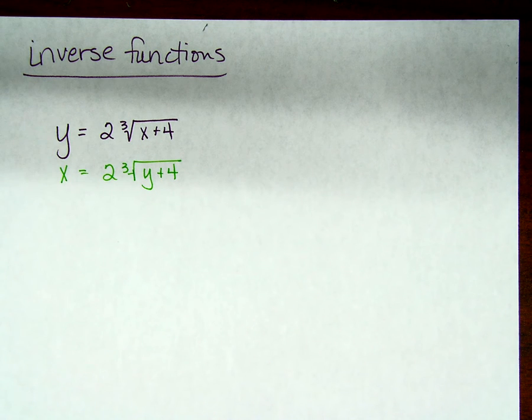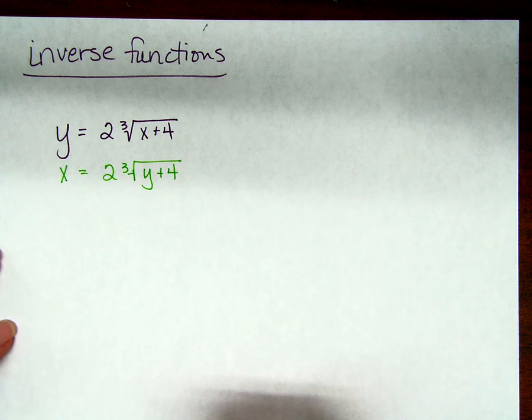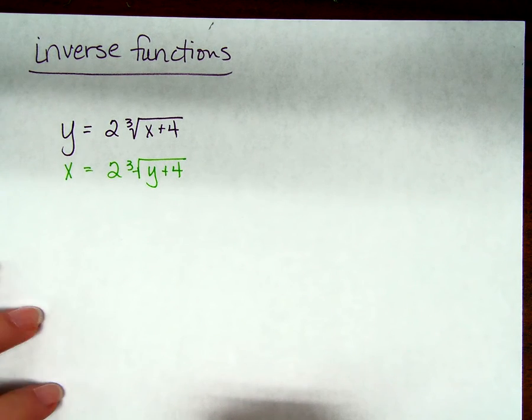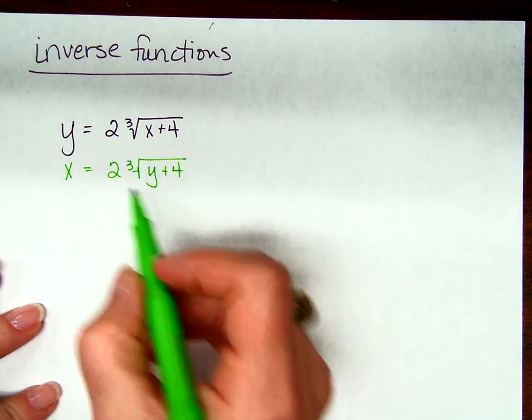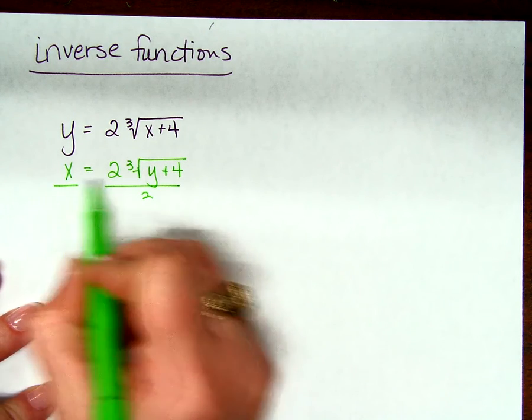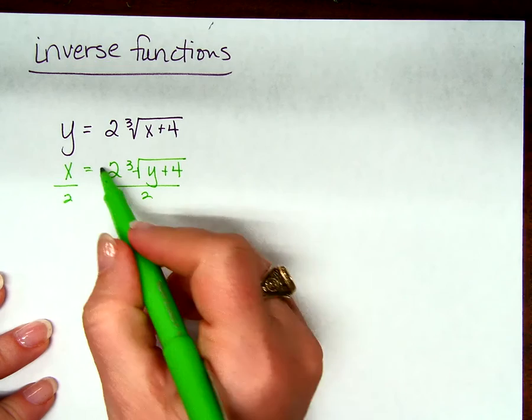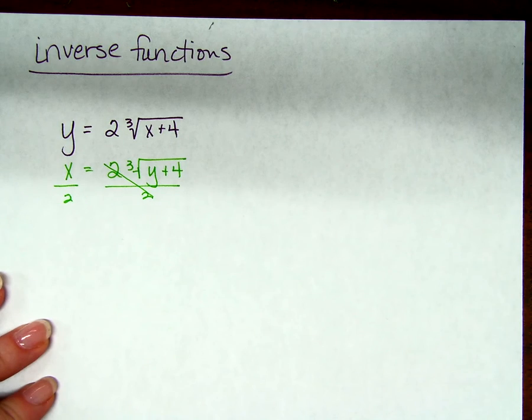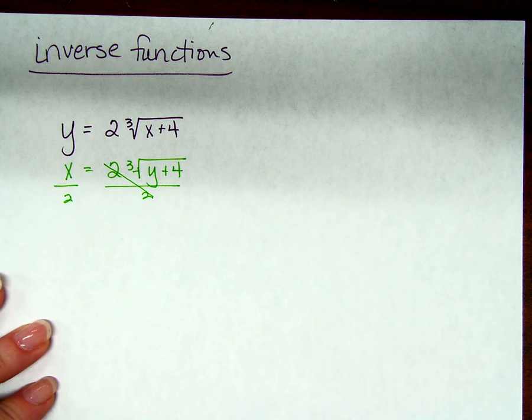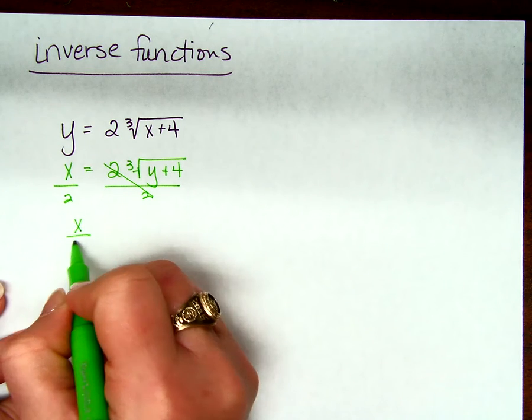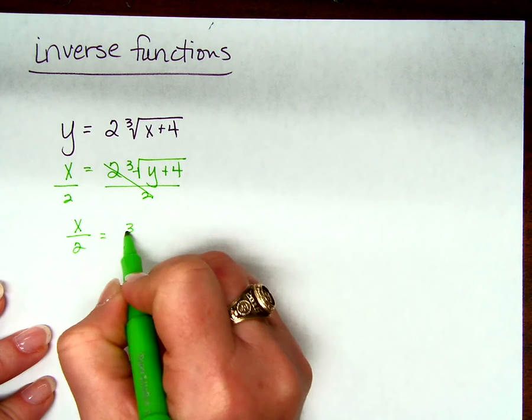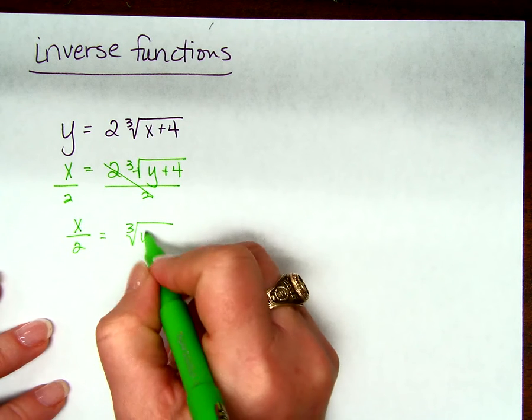So how do I solve for y now? What do I do first? Nope, not first. Not first. I have to divide by 2 first, yeah. I've got to isolate the radical, so I do that by dividing by 2 first. Because 2 divided by 2 is 1, so that simplifies, that goes away, okay? On the left hand side I have x over 2, and on the right hand side I have the cube root of y plus 4.